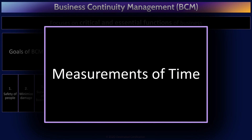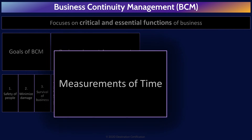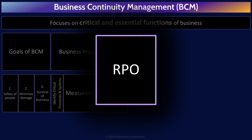The owner must approve these numbers because ultimately the owner must pay for the costs associated with achieving these numbers. Each of these numbers is a measurement of time — seconds, minutes, hours, days. The recovery point objective, the RPO, is a measurement of how much data an organization is willing to lose in the event of a disaster. So if the server explodes, what is the maximum tolerable data loss as a measurement of time? Five seconds worth of data, 10 minutes worth of data, three hours, two days — that's the RPO.